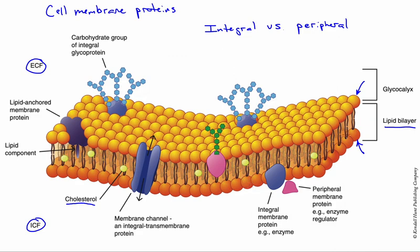If we look at the cell membrane proteins, they fall into two main categories. They can be either integral, in which case they are continuously associated with the membrane, or they can be peripheral, in which case they kind of come and go.